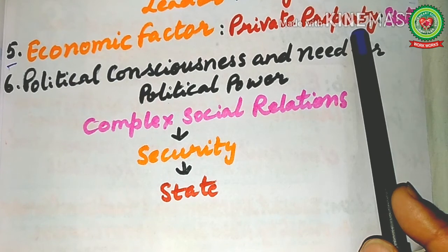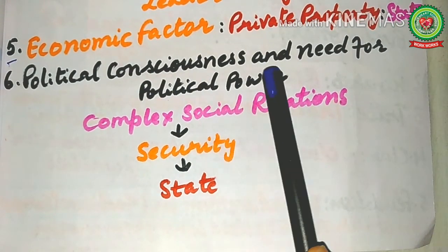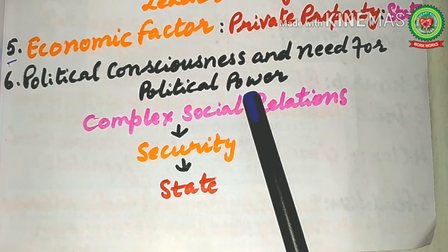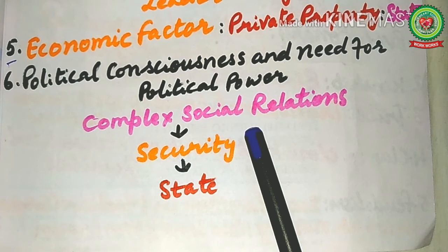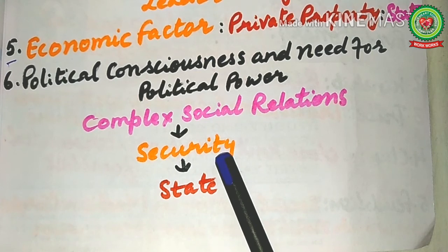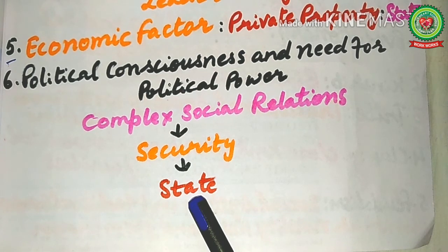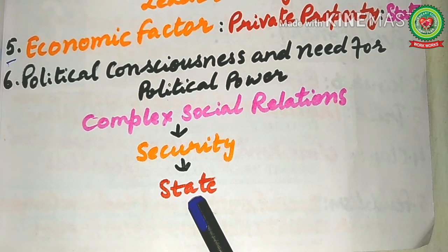The next point is political consciousness and the need for political order or power. The ever-growing complex social relations compelled the human mind to ensure a peaceful social order. Further, the necessity of internal and external security favored the need for an organized institution. This is how the government and state appeared on the scene — the final factor which led to the birth of the state.